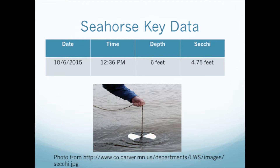We collected our samples in water that was approximately 6 feet deep. We also used a Secchi disk to determine the clarity of the water. As you can see from the picture, a Secchi disk is a disk attached to a rope. The rope is lowered into the water until the disk disappears from view; the rope is typically marked at particular increments, such as every 6 inches. This helps determine water clarity by using those increments to find the depth at which the disk disappears from view. When we performed this task, the disk was visible down to a depth of 4.75 feet, which was the majority of the water column.